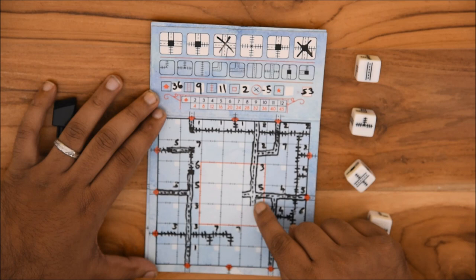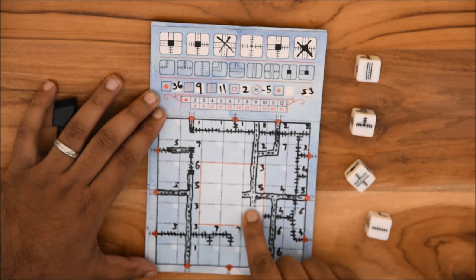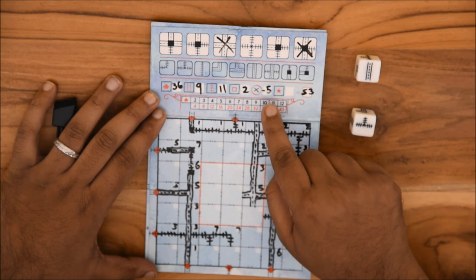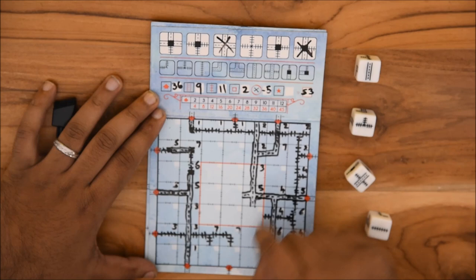The last component in the score guide are the negative points you get from errors in your construction. Each unconnected path or erroneously, that is railroad to highway without a junction, connected path incurs a one point penalty. Add up all such errors and record that into the fifth box of the score guide. Now sum the first four boxes and subtract the fifth box value to get your final score. The highest scoring player wins the game.